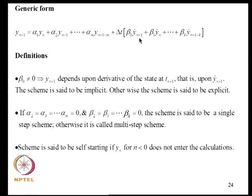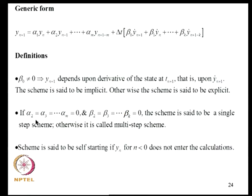Examining the generic form: if beta0 is not zero, YN plus 1 depends on Y dot N plus 1, meaning the derivative at the future time step is needed — such schemes are called implicit. If beta0 is zero, the scheme is explicit. If alpha2 through alphaM and beta2 through betaM are all zero, the scheme is single-step; otherwise it is a multi-step scheme.